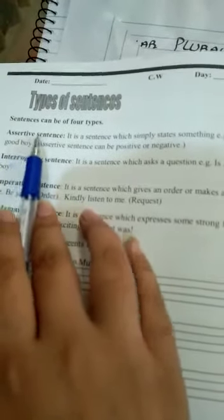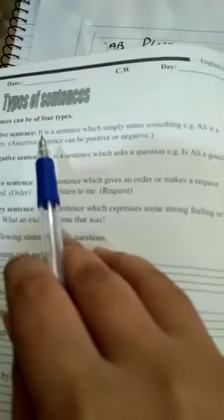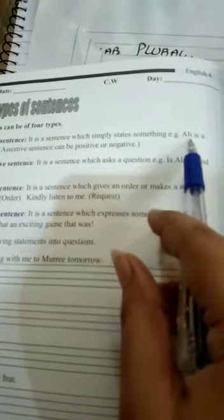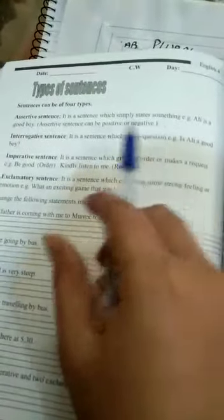First of all, we will do assertive sentence. These are simple sentences in which we make a simple statement. It is a sentence which simply states something. For example, here you can see: Ali is a good boy. She is a nice girl. She goes to school. These are simple sentences.